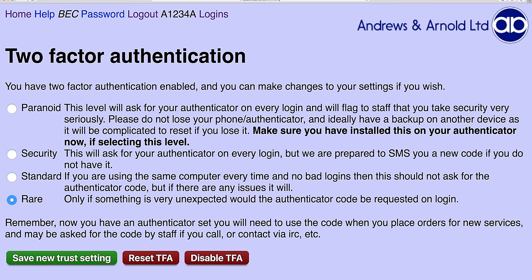It says two-factor authentication is now enabled and you can make changes to your settings. There are several settings — you probably want something like 'standard' or maybe 'security' to ask every time. You can also set a paranoid mode. If you do that, you will not be sent the code by SMS again, and our staff will know you selected this, so they will be very cautious if you phone, email, or ask them on IRC, and they will ask you to supply a code to confirm it's you.